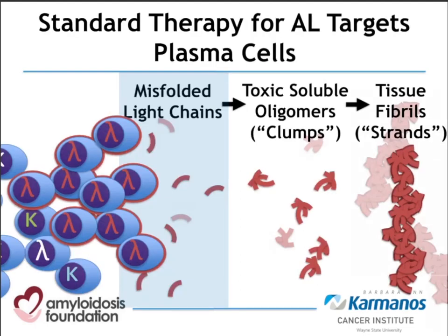The first thing to understand about AL amyloidosis is that this is a plasma cell disorder. There is an overgrowth of an abnormal population of plasma cells, typically in the bone marrow. These cells make misfolded light chains. Light chains are fragments of antibody proteins, and each plasma cell makes antibodies of one type — either kappa or lambda. What we see is an overgrowth of plasma cells, with an excess of cells making lambda-type light chains predominantly.